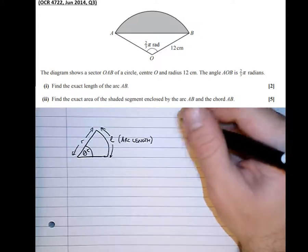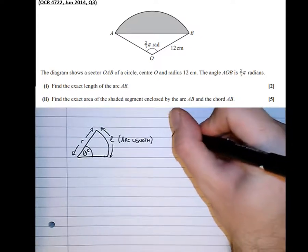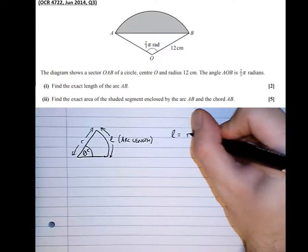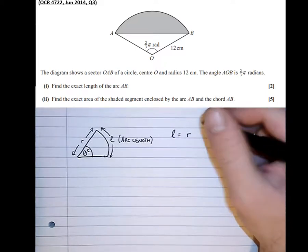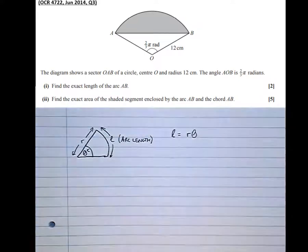The formulae are massively simplified. So the arc length, L, rather than being 2 pi r times whatever the angle is over 360, it simply becomes r theta.